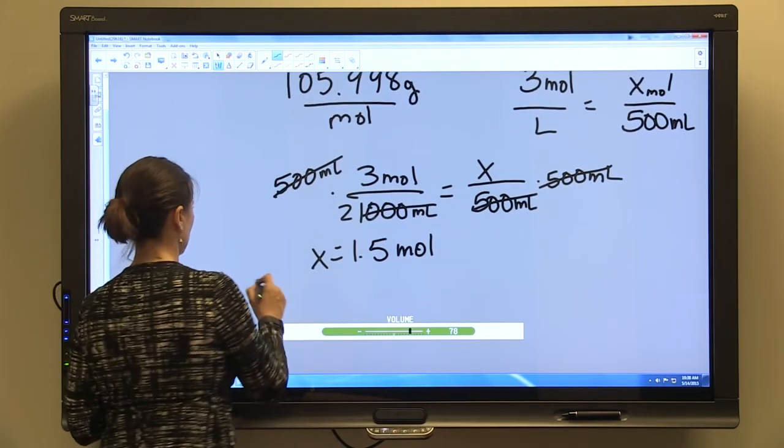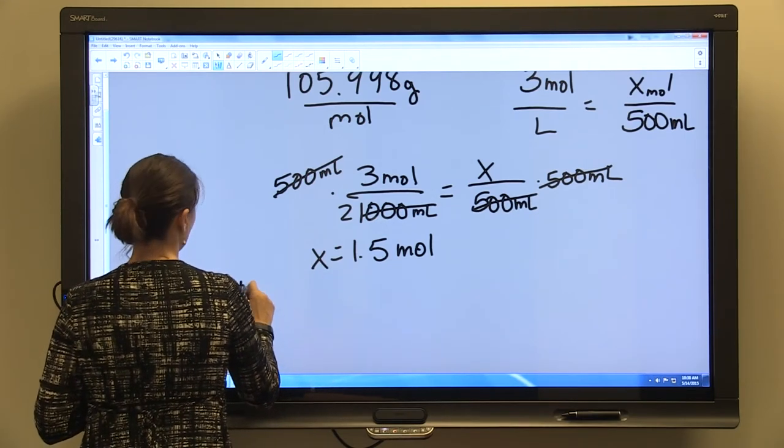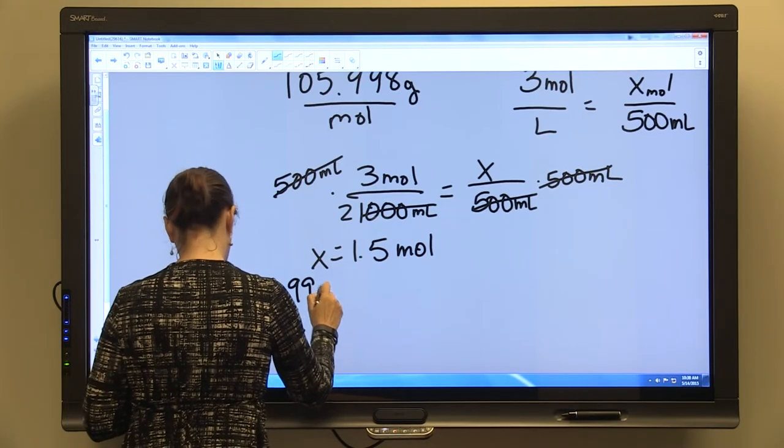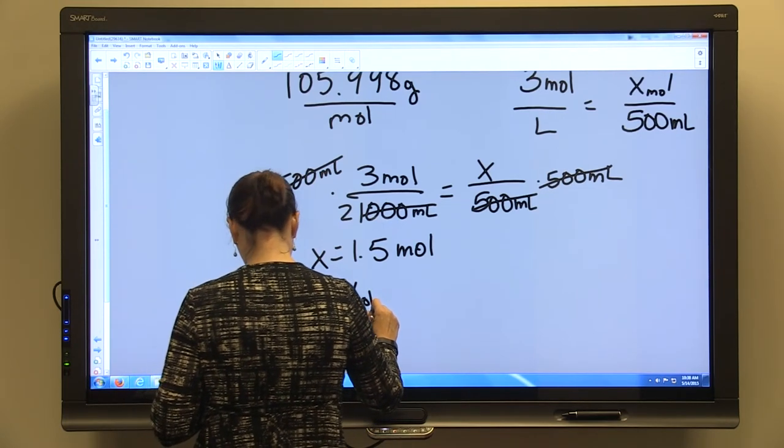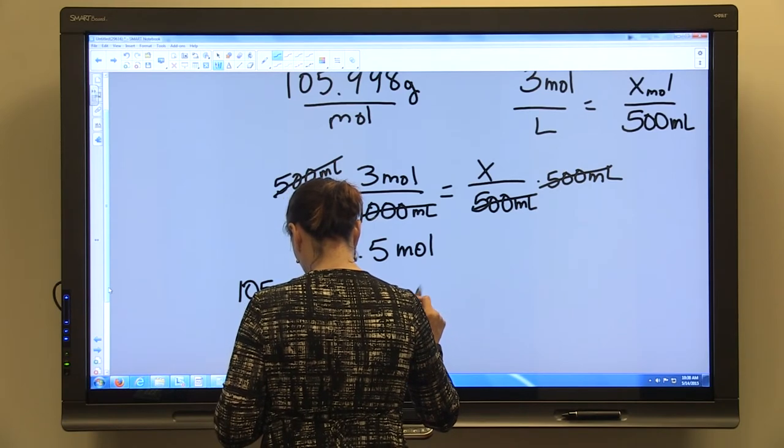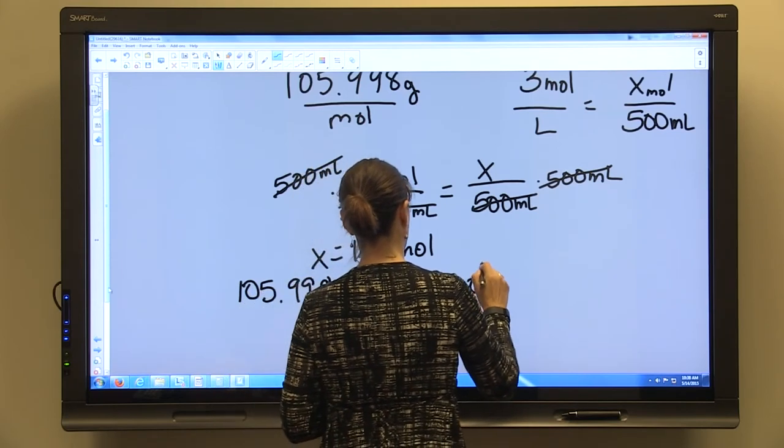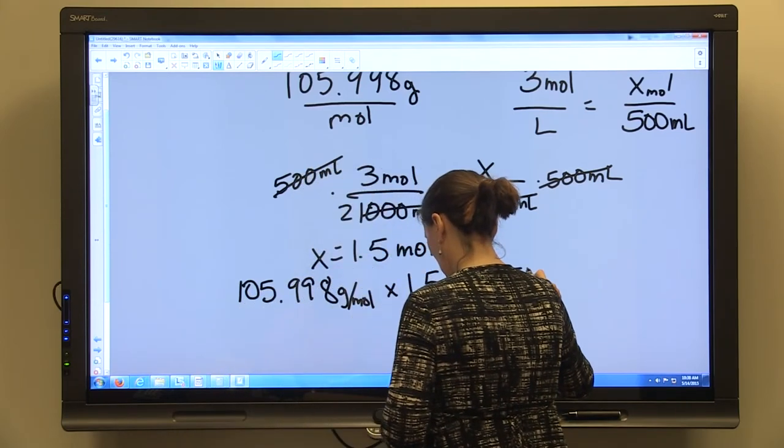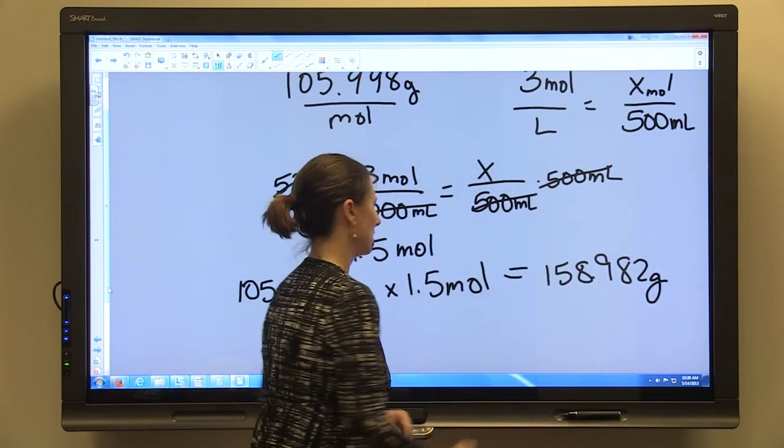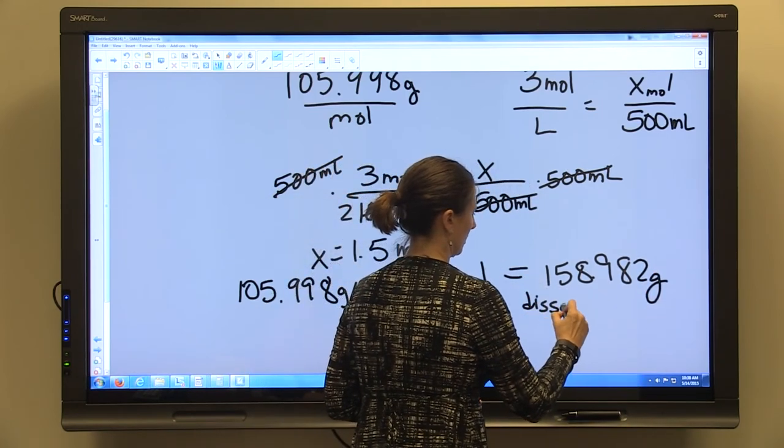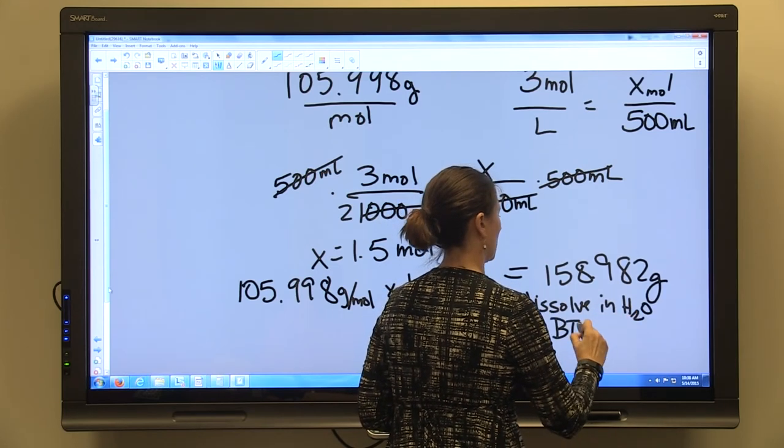So then you would know that you have 105.998 grams per mole times 1.5 moles, and you're going to get that same 158.982 grams that you need to dissolve in water and bring to the volume of 500 ml.